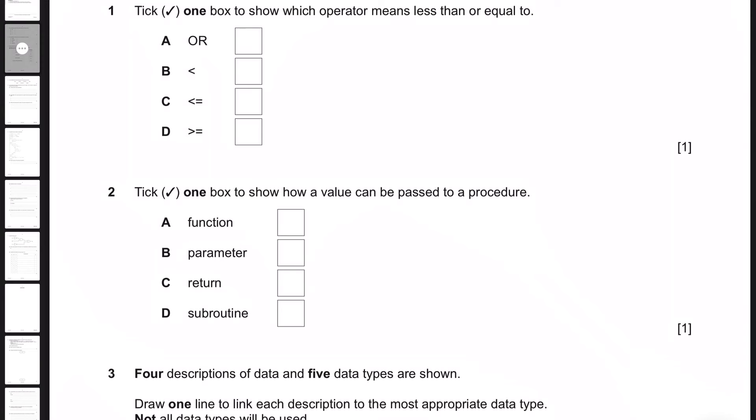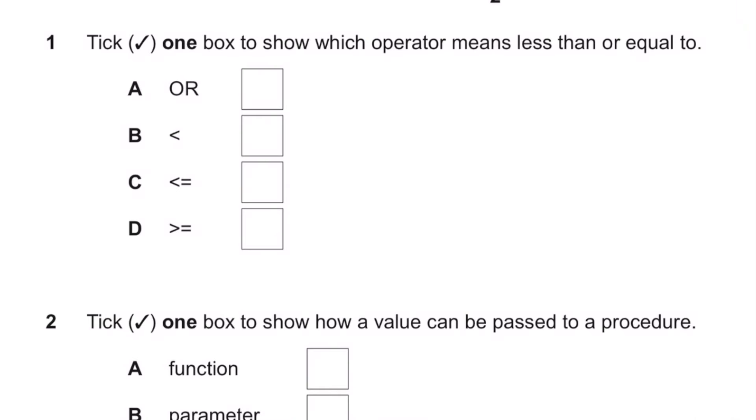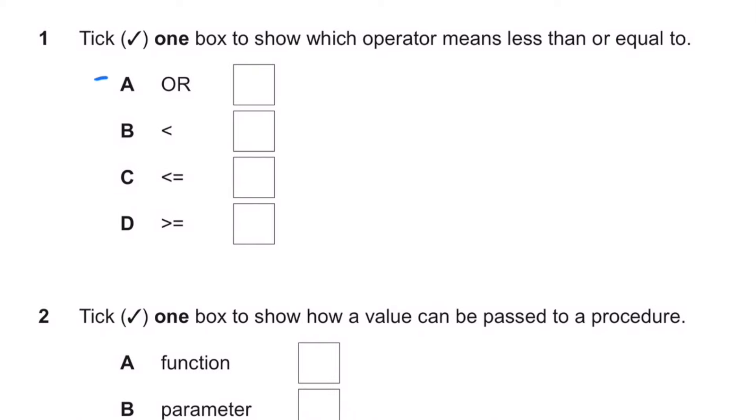These were the grade boundaries for this particular year, November 2023. We're looking at Component 2, 75 marks. If you were to be getting over 44 out of 75, we'd be looking at an A. For an A star, we combine Paper 1 and Paper 2, and out of 150 we would be looking at marks over 103. So not too difficult, about 70% to get an A star. Let's get started. Question 1: Tick one box to show which operator means less than or equal to. C is less than or equal to.